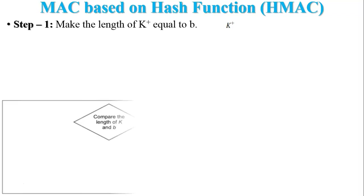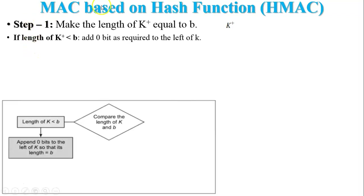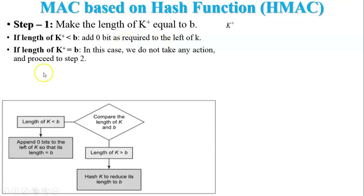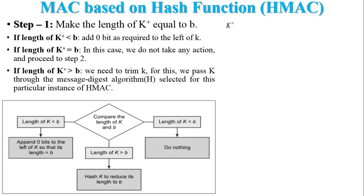There are three possibilities for Step 1. First, if K is less than b, add zero bits so that K equals b, then proceed. Second, if K equals b, no action is taken and we proceed directly to Step 2. Third, if the length of K is greater than b, we reduce some bits so that K equals b, then proceed to Step 2.